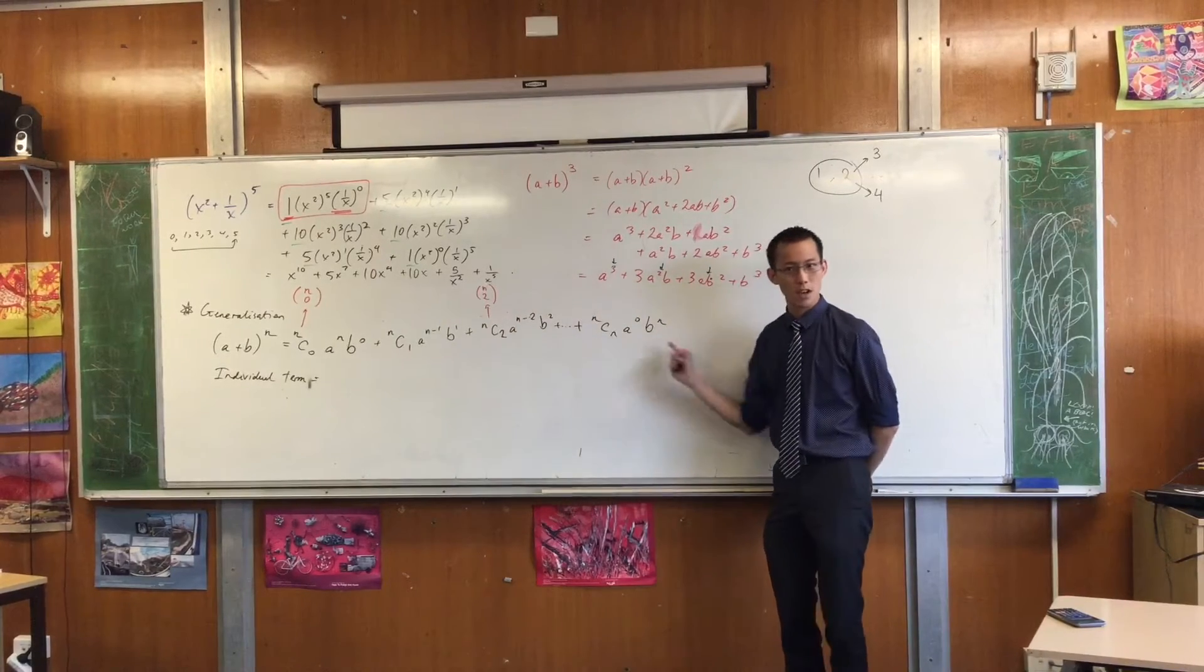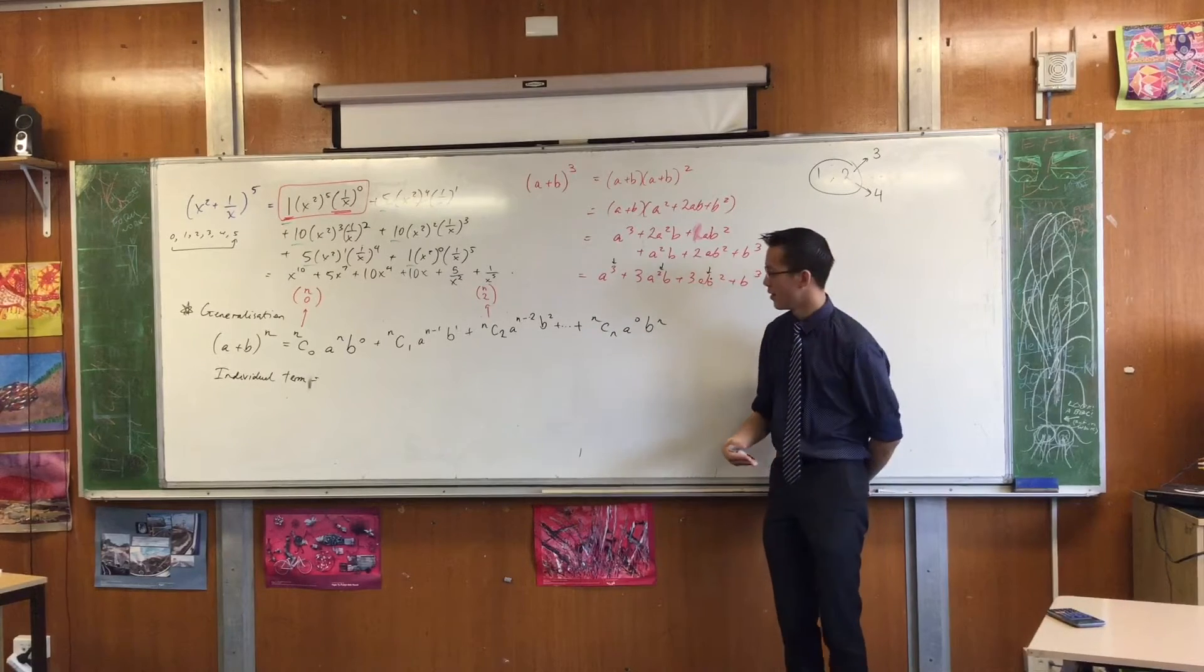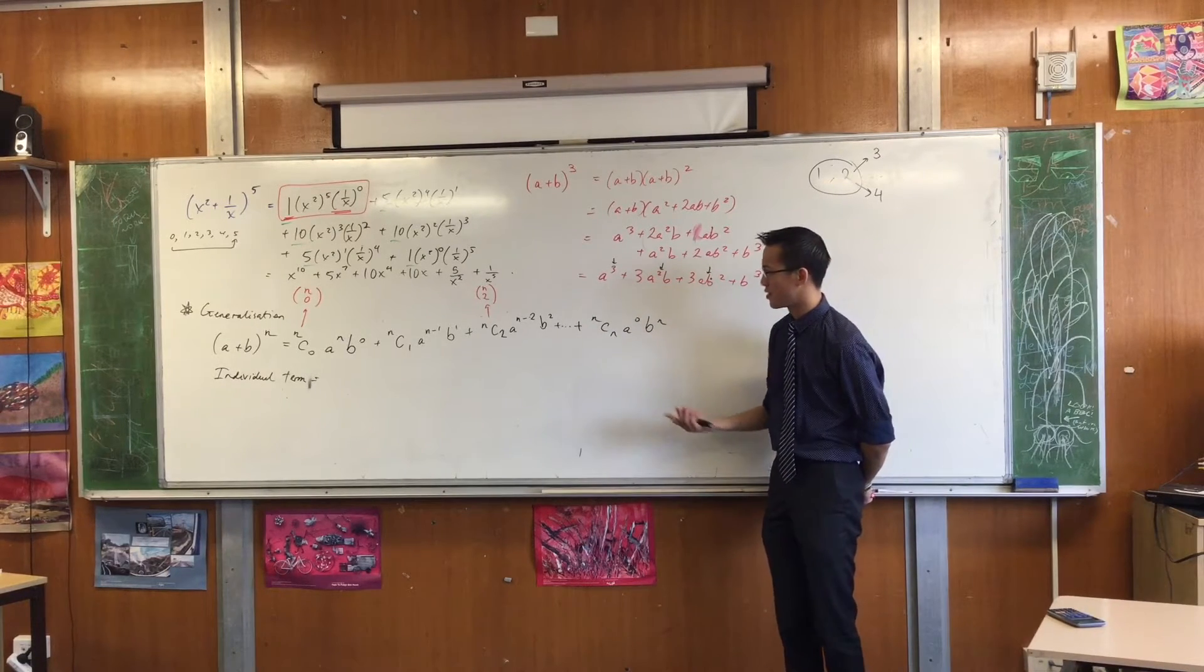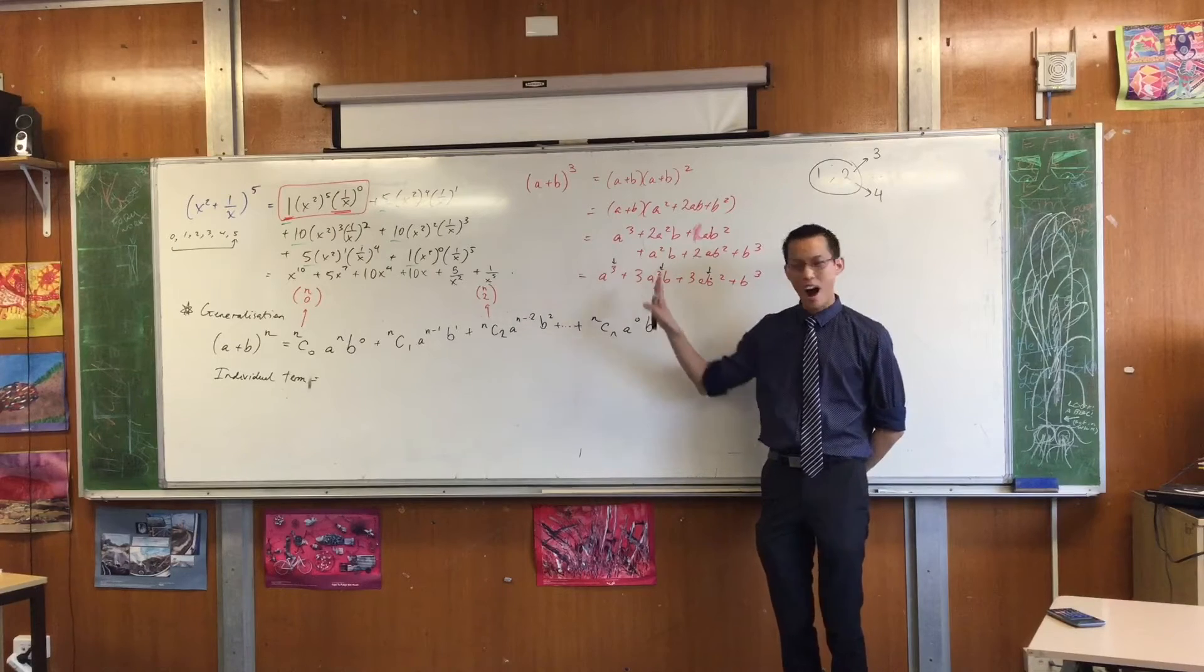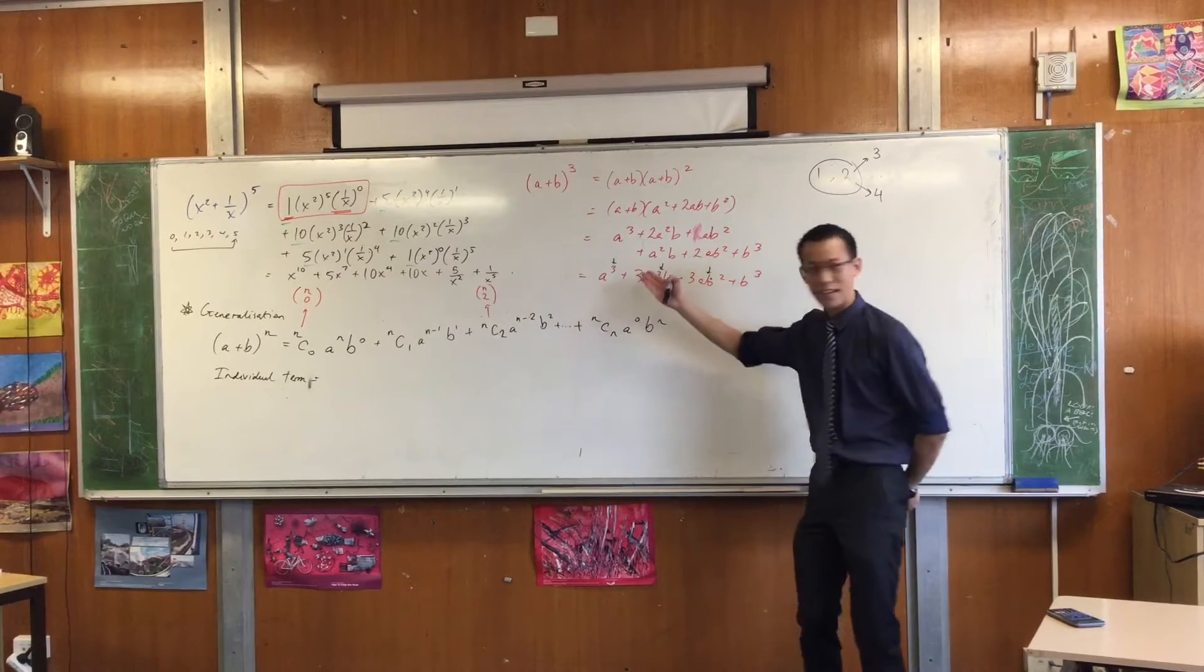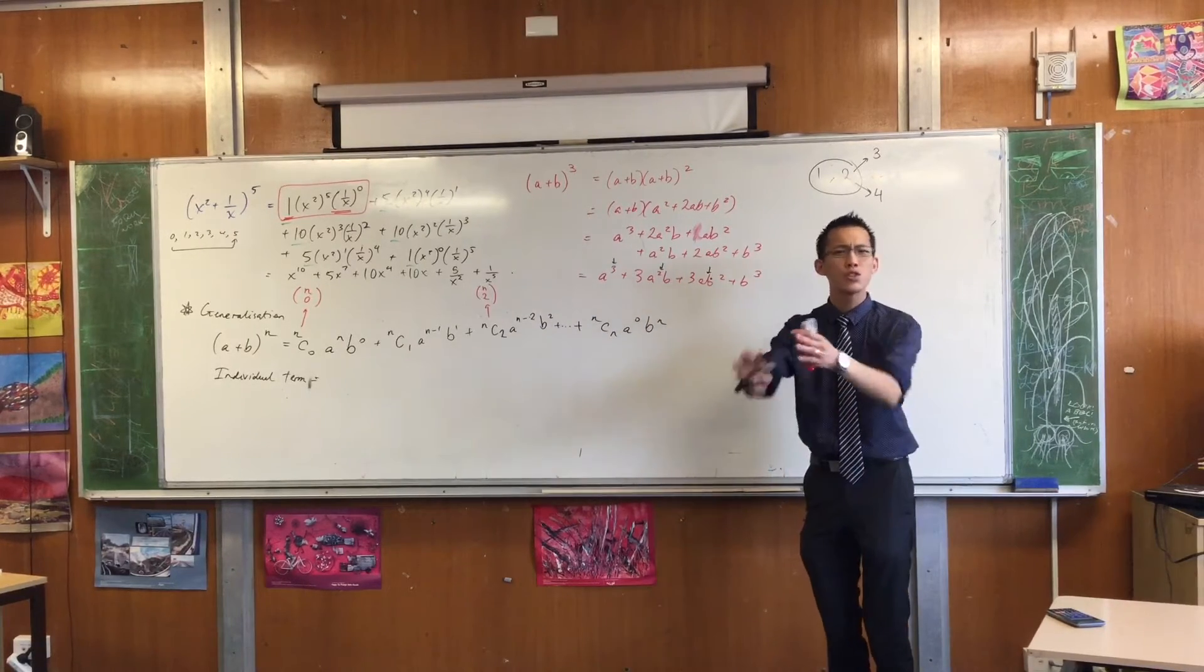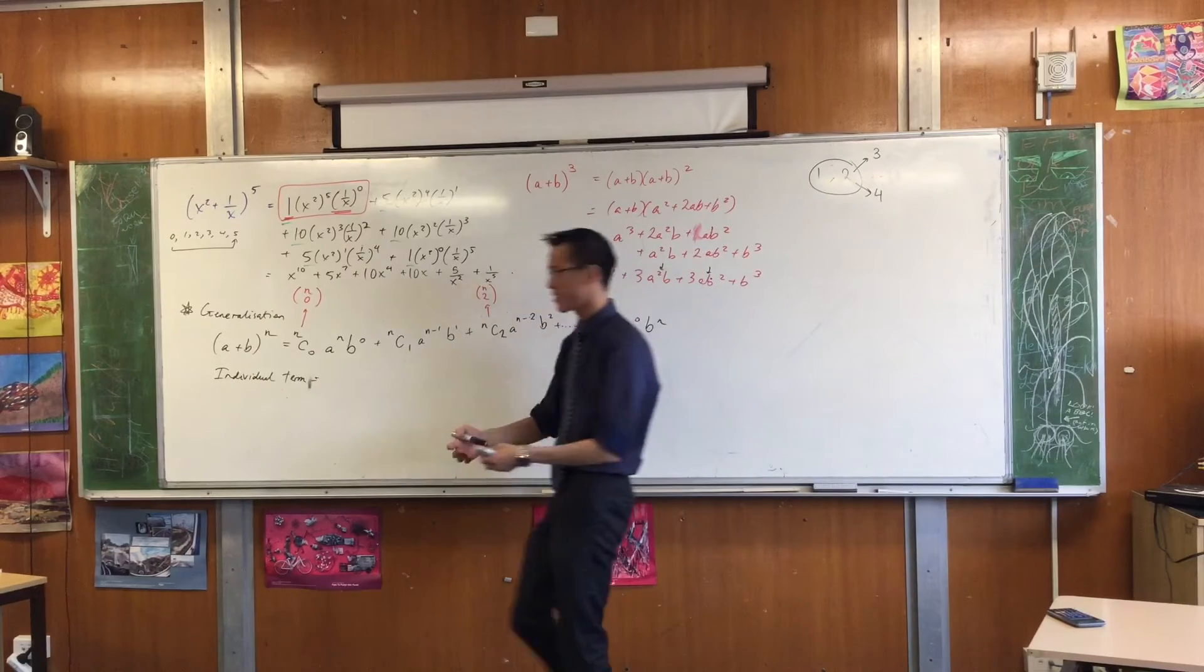So if I just want one of these terms, what's the way I'm going to state it? By convention, I don't really know why they choose this letter, but they say R. N is a normal letter to use for which number do you want, but I've already used N to be the row of Pascal's triangle that I'm on. So they designate which term do you want? Let's say the R term.